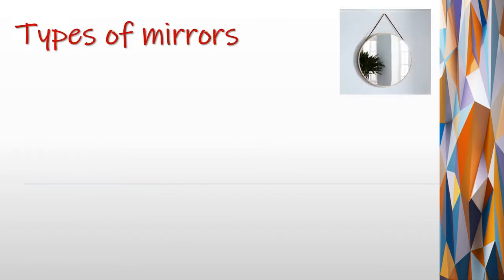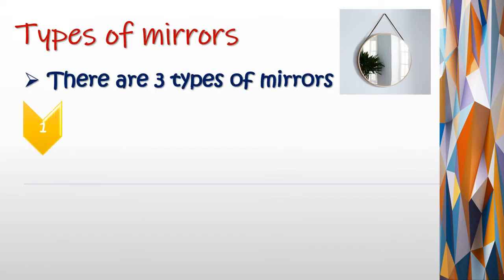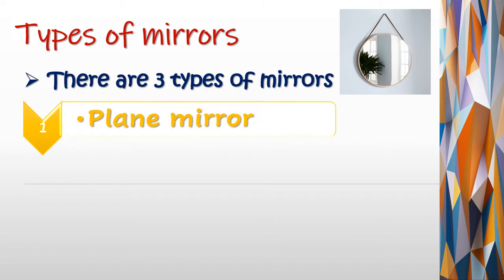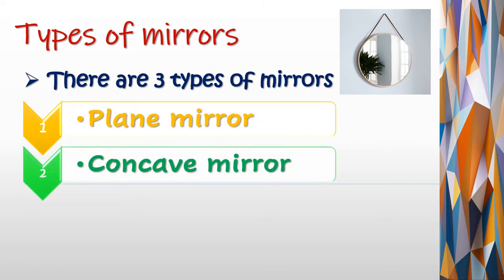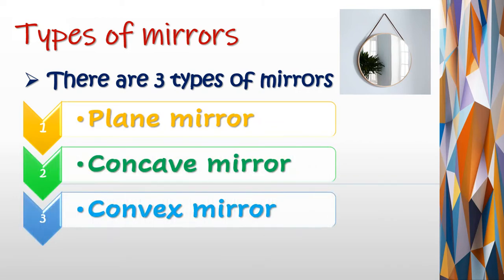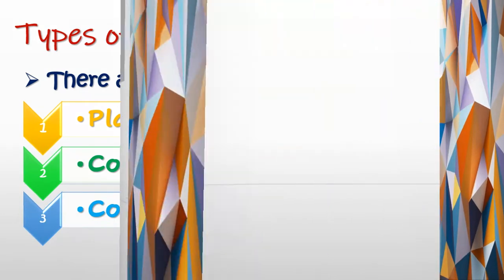What are the types of mirrors? There are three types of mirrors: the first type is the plane mirror, second is the concave mirror, and third is the convex mirror.